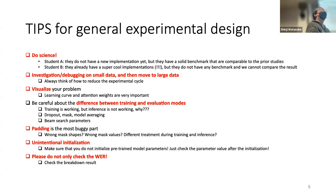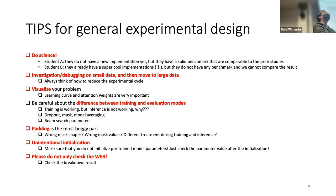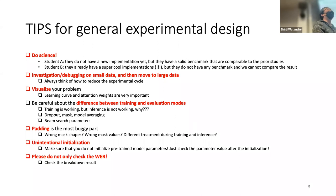First: do science. This question often comes up. Student A hasn't finished any new implementation but has already finished the story to baseline. Student B has finished their great ideas, implemented them, and gotten experimental results, but has no benchmark baselines. The question is: which one is easier for me to guide toward, say, a paper?